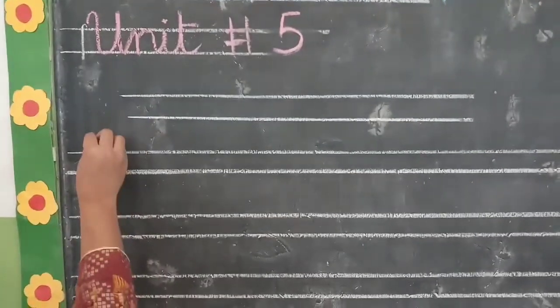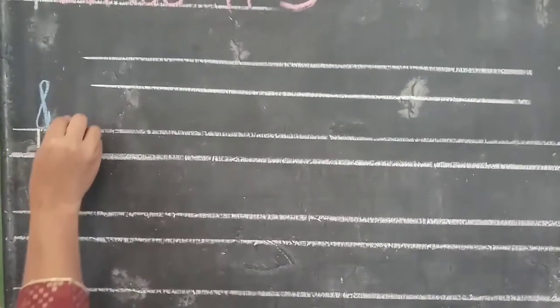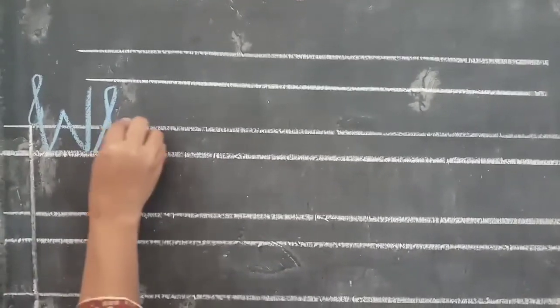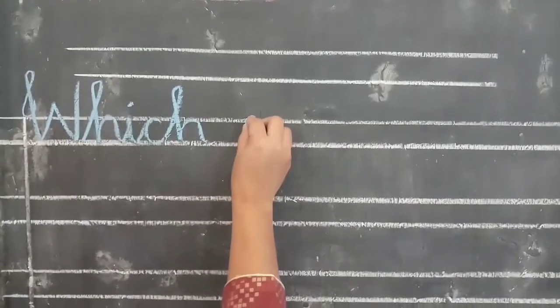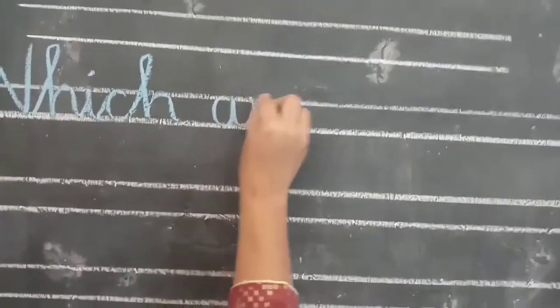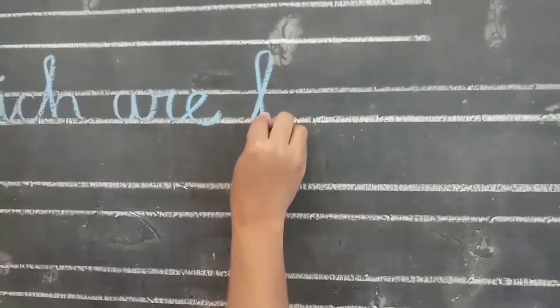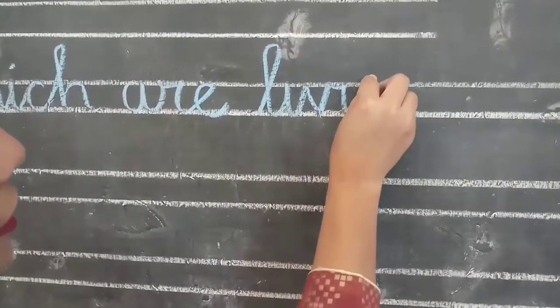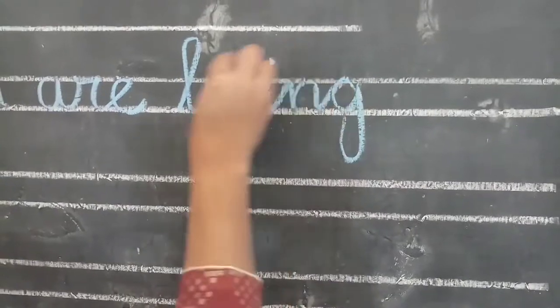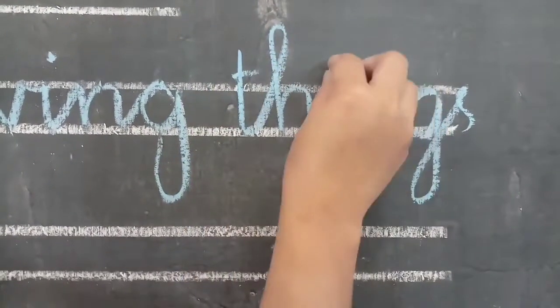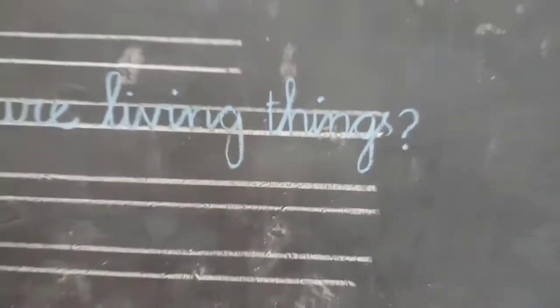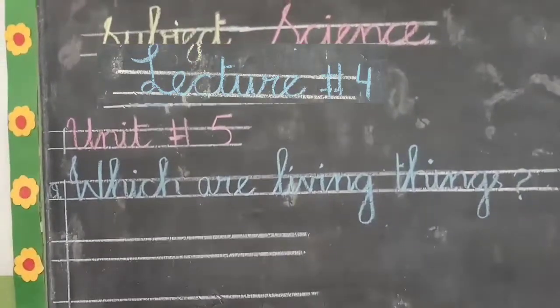Now write the heading: W-H-I-C-H, which. Take one finger space and write R-A-R-E-R, which are. Take one finger space and write living — L-I-V-I-N-G — living things. Take one finger space and write things. Which are living things? Question mark.